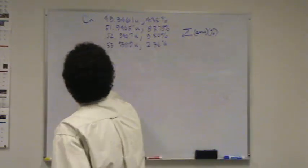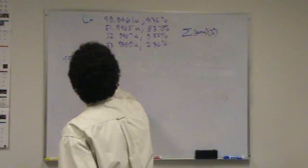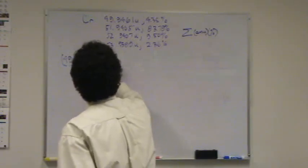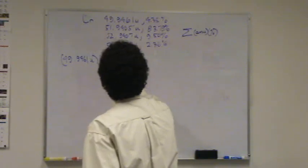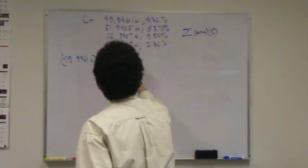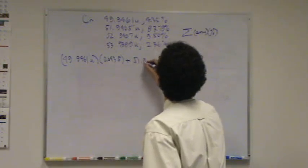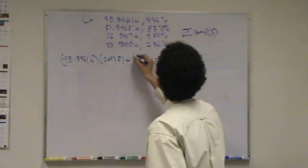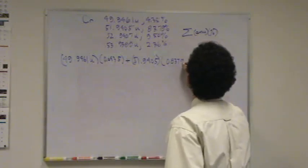Alright, so let's try this. There's going to be a lot of numbers. Plus 49.9461u times 0.435—oh, and I forgot it's 0.0435—plus 51.9405 times 0.8379.